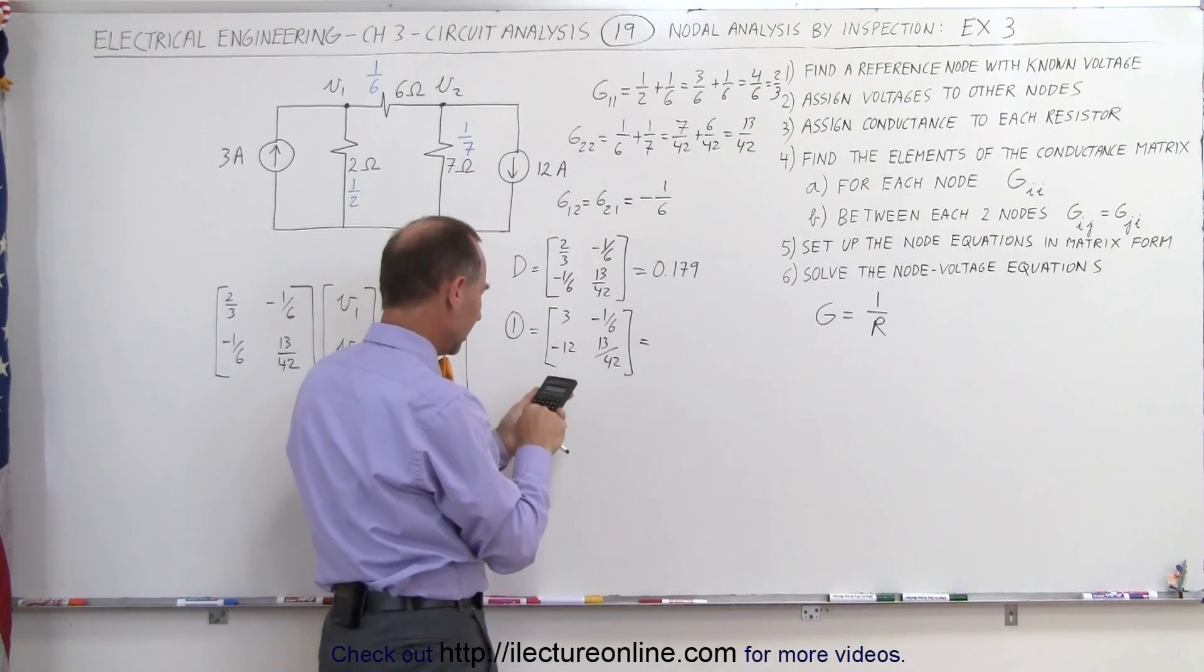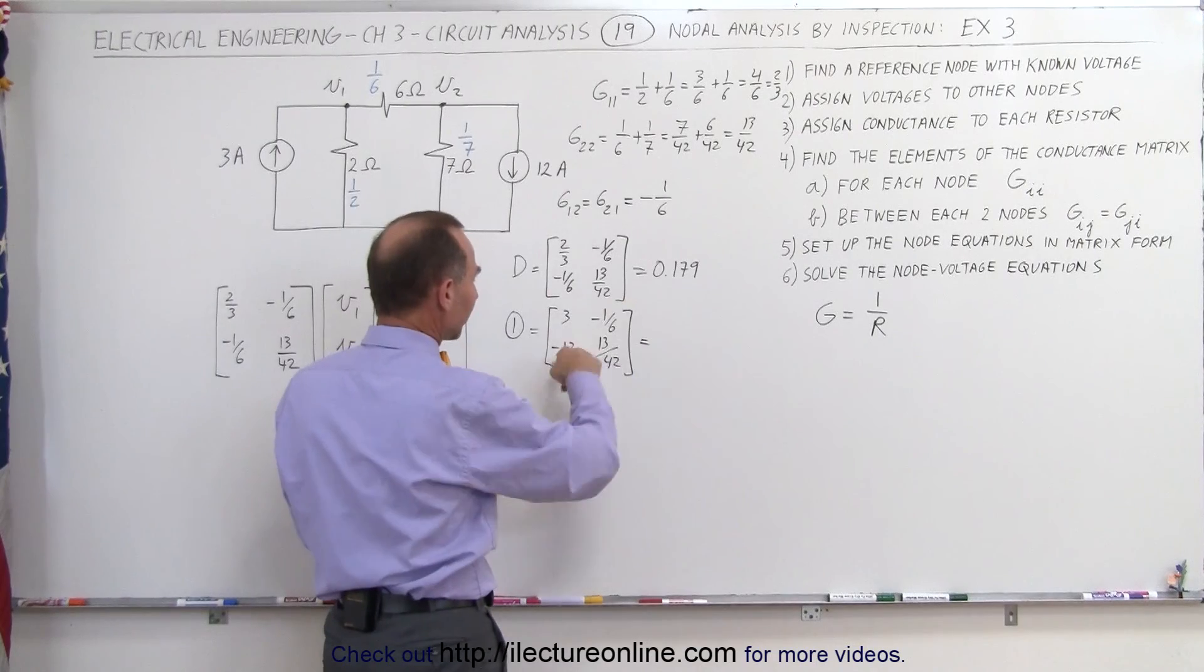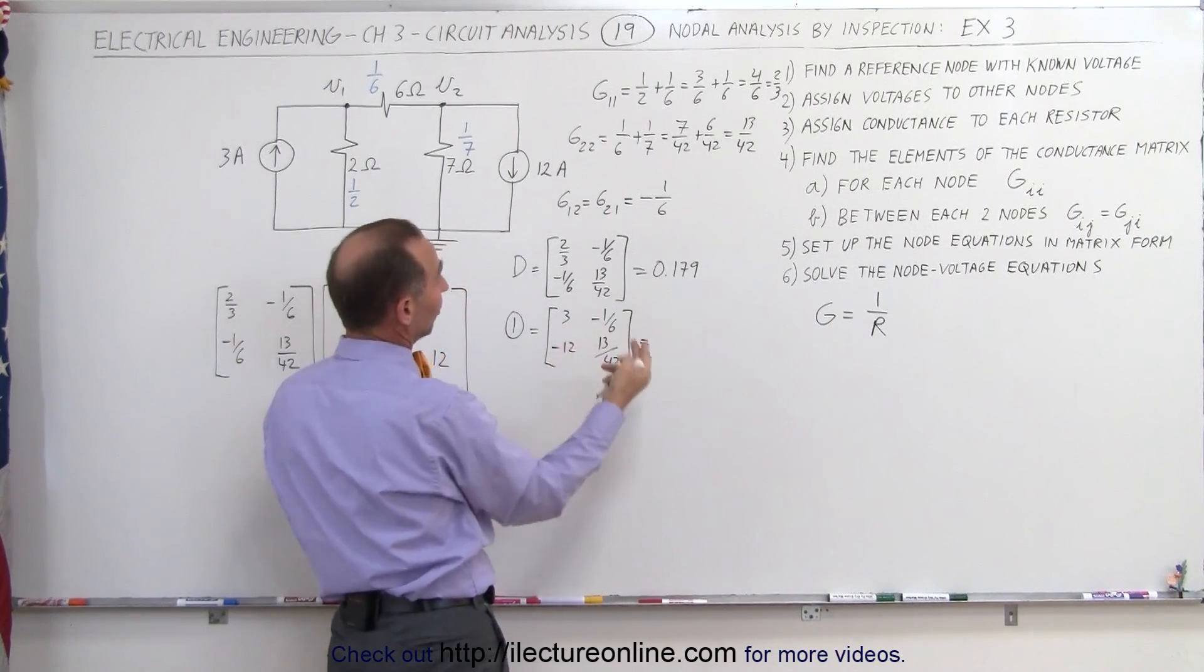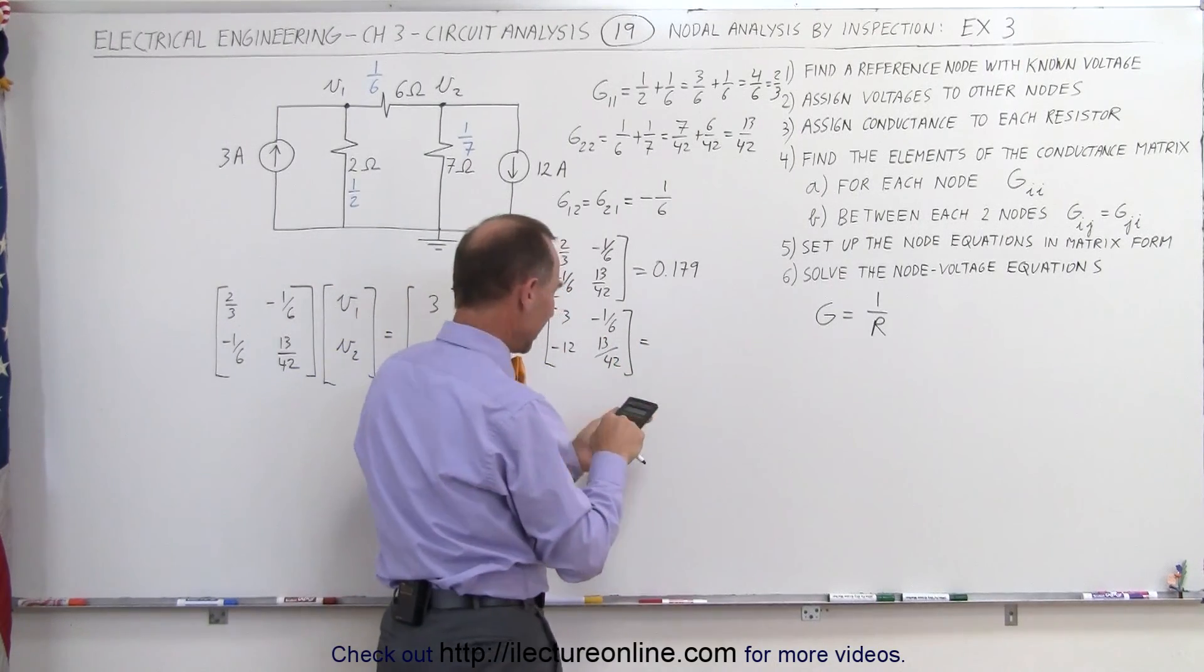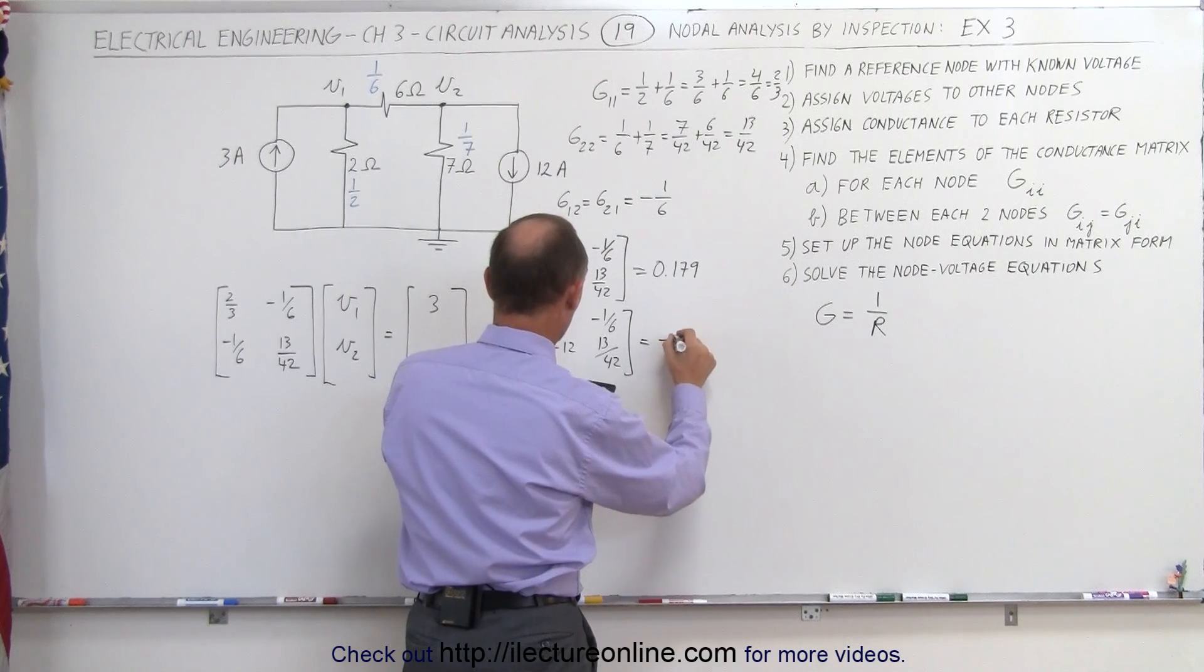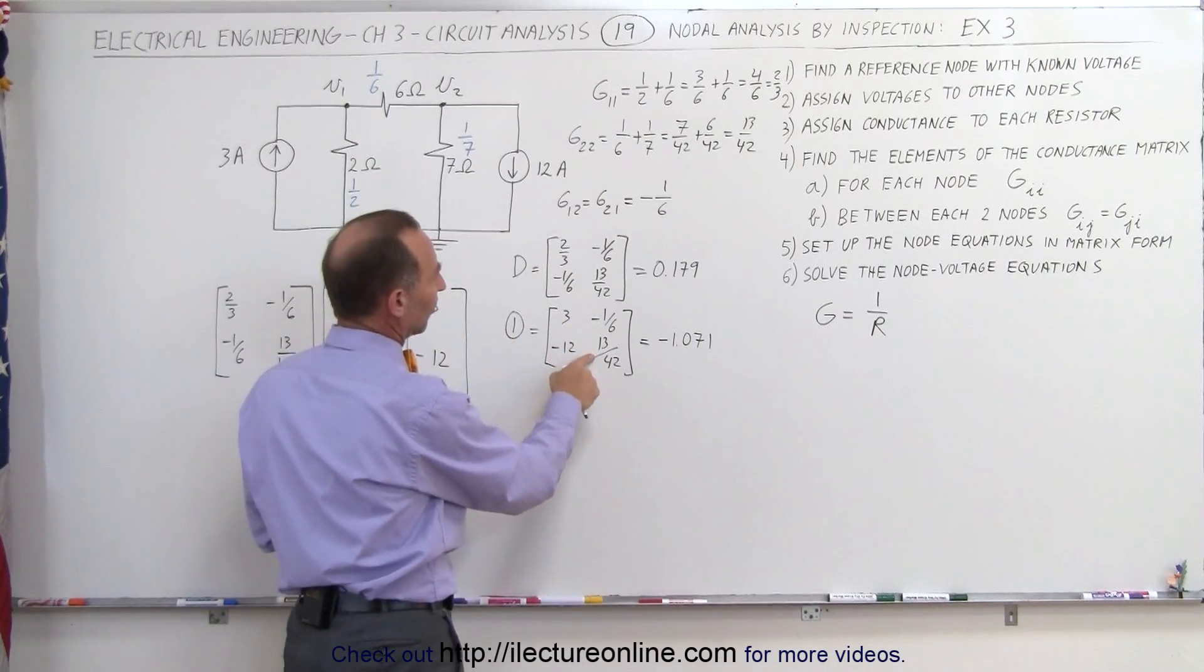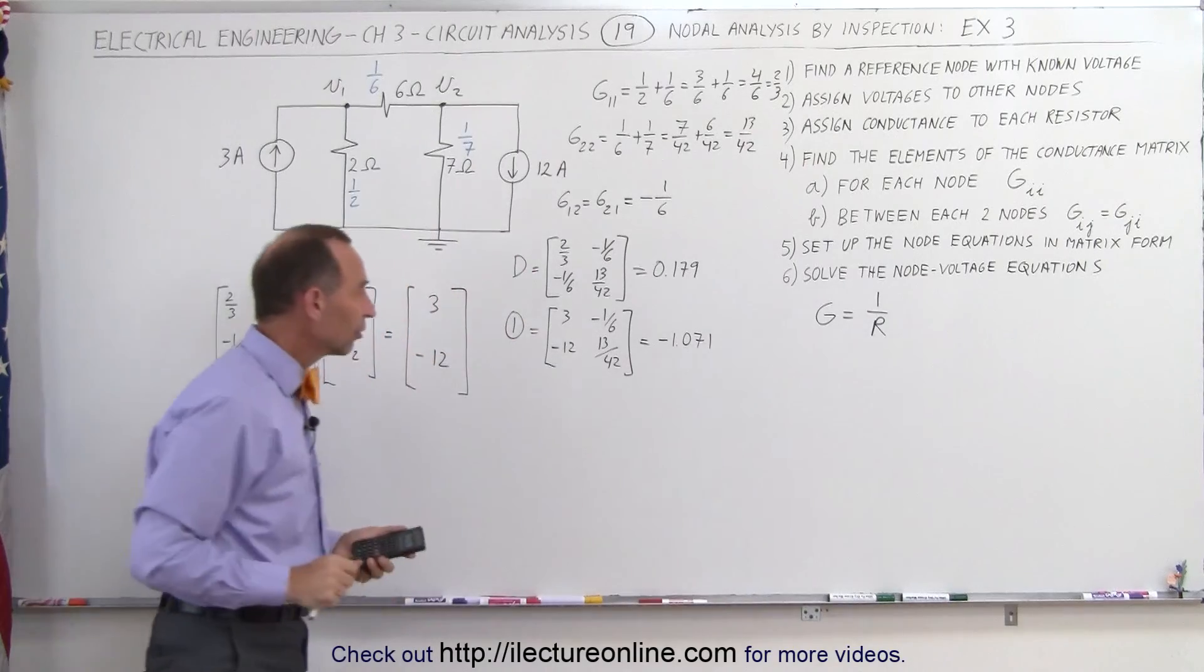That's 39 divided by 42, and we subtract from that the product of these two, well, that's minus times the minus is plus, so we subtract 12 divided by 6, that's 2, minus 2, and we get minus 1.071. Quickly checking this again, there'll be something just slightly less than 1, subtract 2 from that, so that looks good, that looks about right.